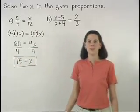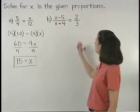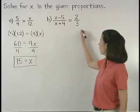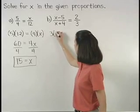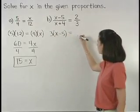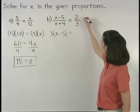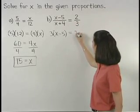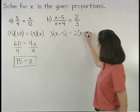In part B, the product of the extremes, x minus 5 times 3, or 3 times x minus 5, equals the product of the means, x plus 4 times 2, or 2 times x plus 4.